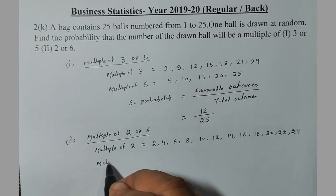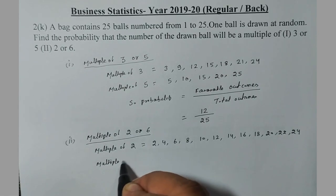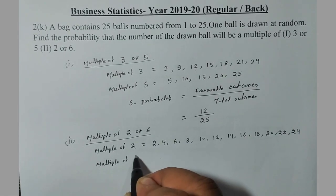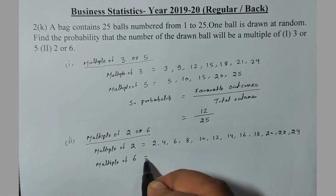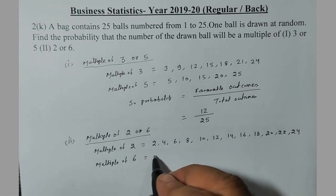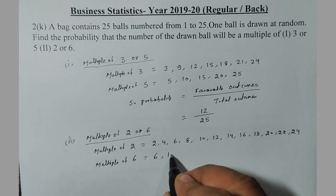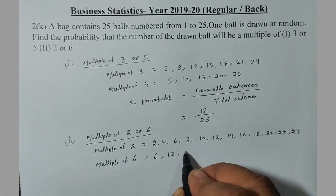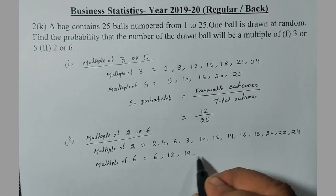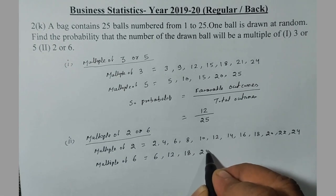The next step is to find the multiples of 6. The multiples of 6 from 1 to 25 are: 6, 12, 18, and 24.